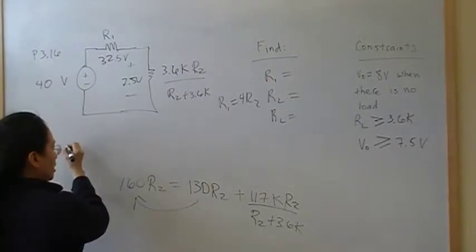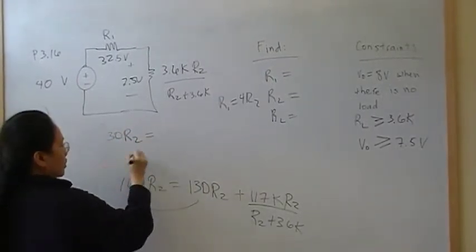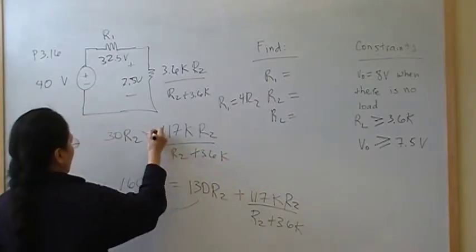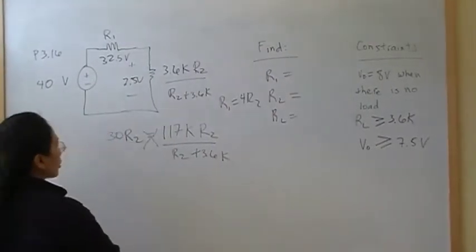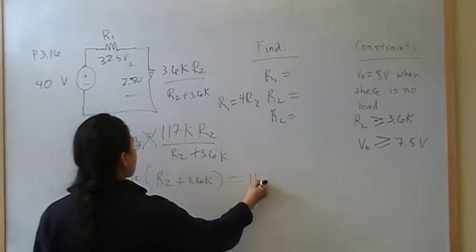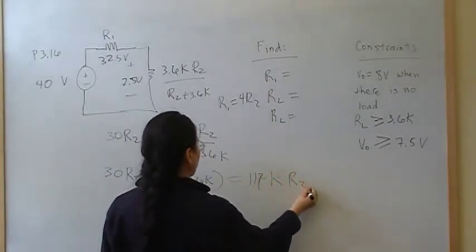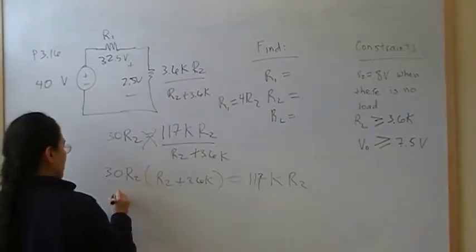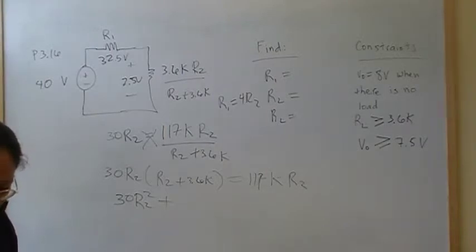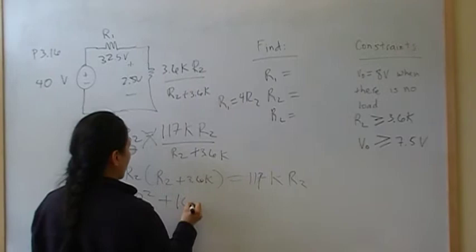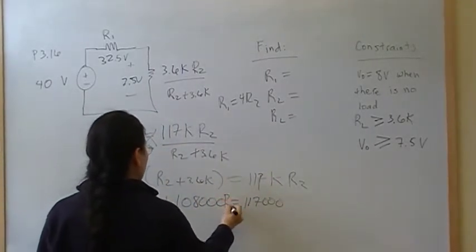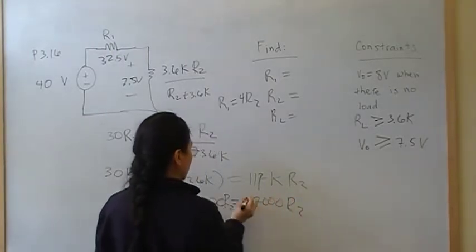This is where we're at right now. Bring this over here gives me 30 R2 is equal to 117K R2 over R2 plus 3.6K. Okay? Cross-multiply. Or multiply both sides by R2 plus R1 gives me 30 R2 times R2 plus 3.6K is equal to 117K R2. Okay? Distribute this through gives me 30 R2 squared plus 30 times 3600, which is 108K R2.